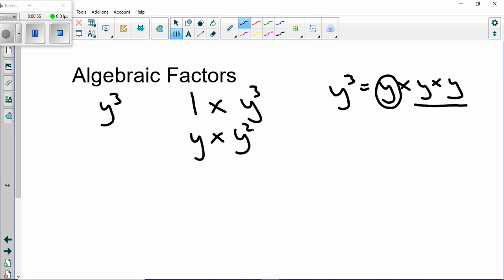Now I could do y cubed times one, well that's already on there. And I could do y squared times y. You know, I've got the three y's here, but I'm only using this one y here.